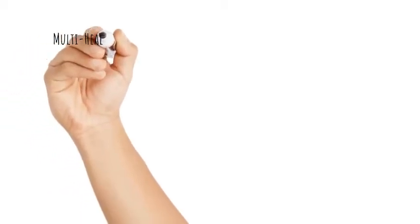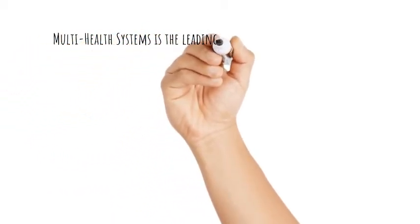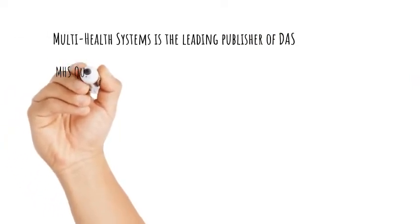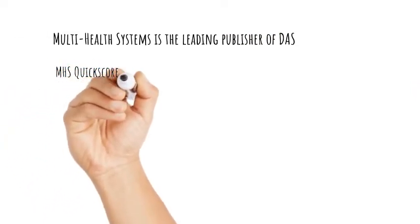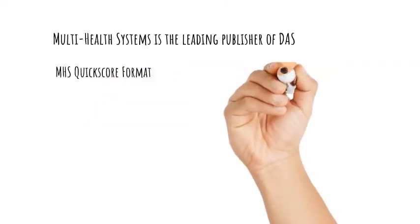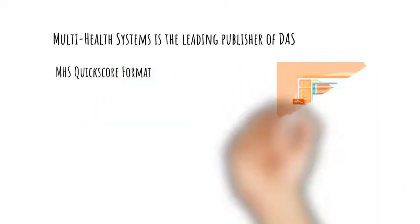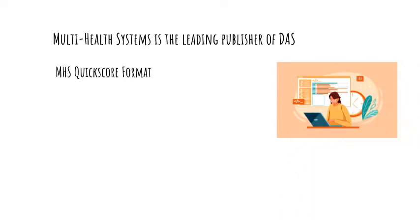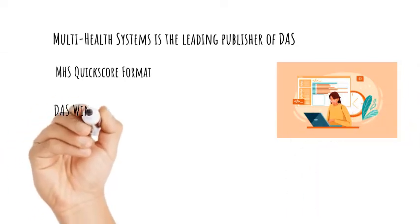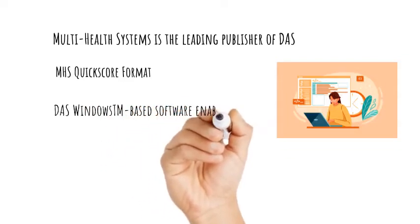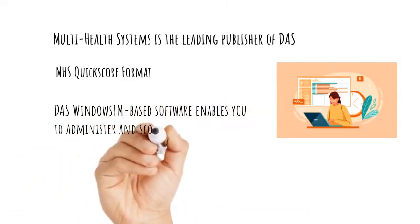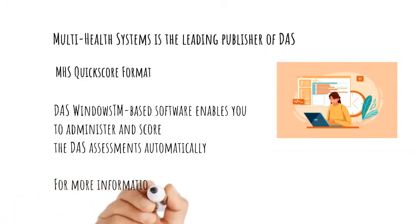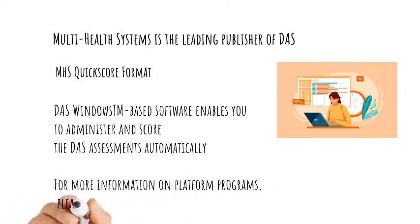The Multi-Health Systems is the leading publisher of the Dyadic Adjustment Scale. It is available in quick-score format, designed for easy recording, scoring, and profiling of responses — no scoring templates are necessary. The respondent's answers automatically transfer through to the concealed scoring page. The DAS Windows-based software enables you to administer and score the scale assessments automatically while the respondent is seated at the computer. For more information, please visit MHS.com.